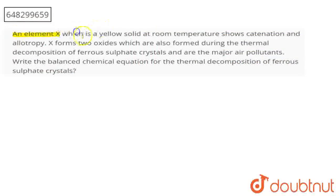Question: Element X which is a yellow solid at room temperature shows catenation and allotropy. X forms two oxides which are also formed during the thermal decomposition of ferrous sulfate crystals and are the major air pollutants. Write the balanced chemical equation for the decomposition of ferrous sulfate crystals.